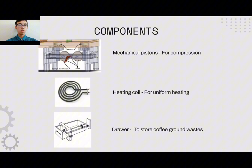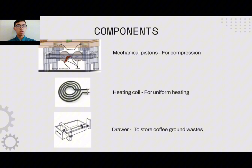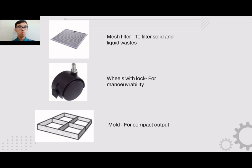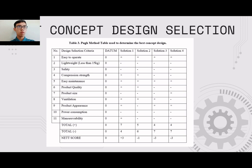My name is Lokal Singh, matrix number D042210137, and I'm going to talk about the components of the machine. Firstly, there are mechanically powered pistons to compress the coffee grounds waste. Next, there is a heating coil for uniform heating around the coffee grounds waste. There is also a drawer to store the coffee waste, and a filter to separate the solid and liquid components into two different compartments. Finally, there are wheels with locks for maneuverability and ergonomic design, and a mold to produce a compact output of the coffee grounds waste.